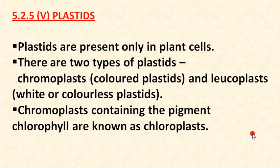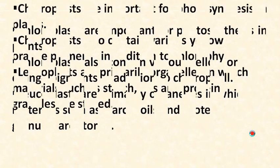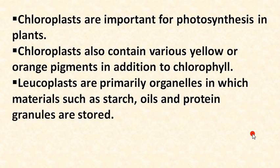Chromoplasts contain the pigment chlorophyll and are known as chloroplasts. Chlorophyll gives green color to the plant, which is why plants are green. Chlorophyll is present in chromoplasts, and these are specifically called chloroplasts.